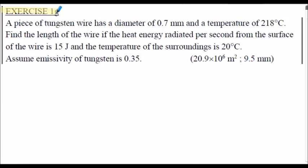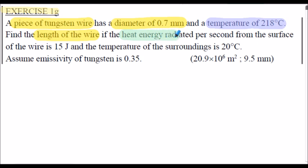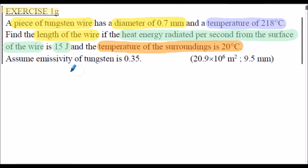Here's exercise 1G: a piece of tungsten wire has a diameter of 0.7 millimetres and a temperature of 218 degrees C. We've got to find the length of the wire if the heat energy radiated per second from the surface of the wire is 15 joules, given the temperature of the surroundings is 20 degrees C. The emissivity value of tungsten is 0.35. I'd encourage you to pause and attempt exercise 1G — it requires our radiation equation to be transposed to find the length of the wire.